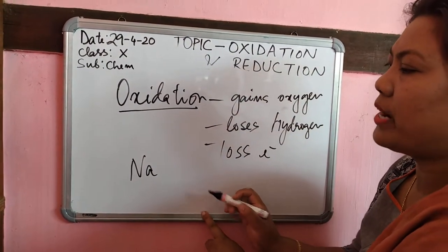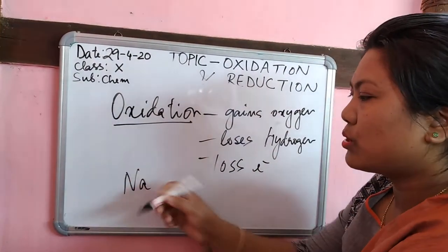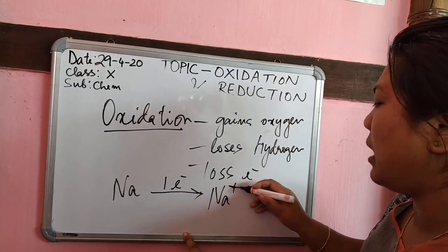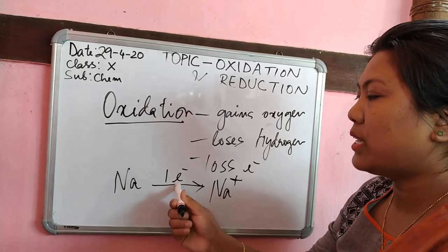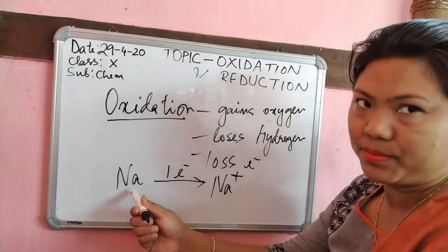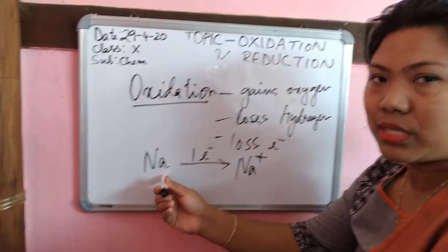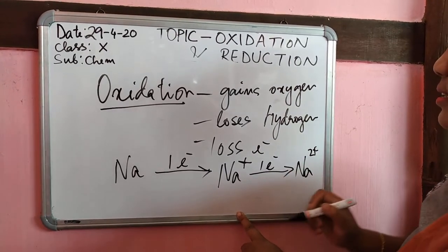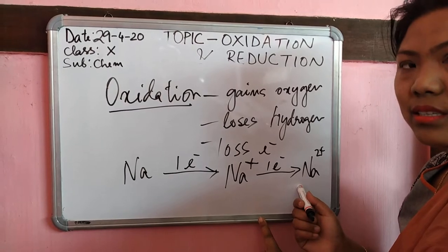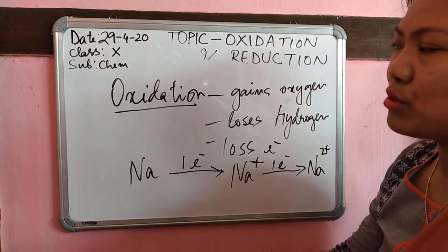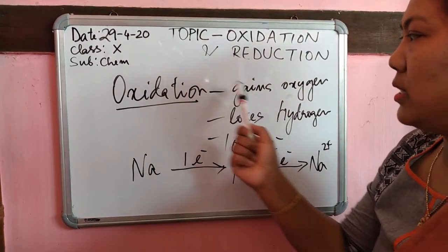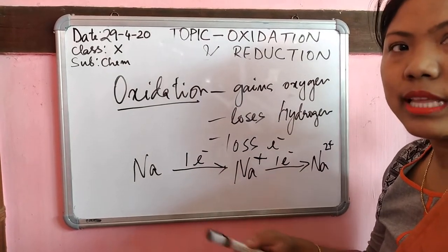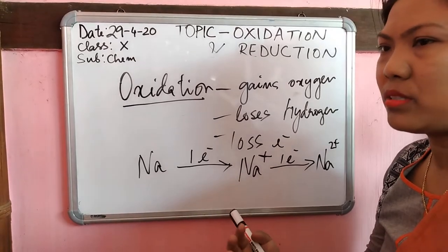For example, sodium: when I write the symbol Na, it is a sodium atom. This sodium atom loses one electron and becomes Na⁺, a sodium ion. So here sodium atom loses one electron and becomes sodium ion — this is an example of oxidation. The sodium atom is oxidized to sodium ion. If it loses another electron, it becomes Na²⁺, which is also further oxidation. So the definition of oxidation is not confined only to gain of oxygen or loss of hydrogen — it also includes that if a species loses an electron, that process is oxidation.